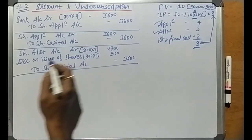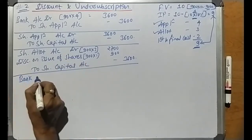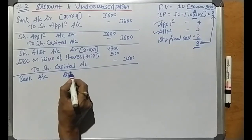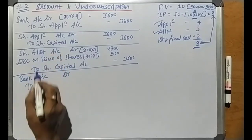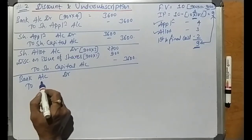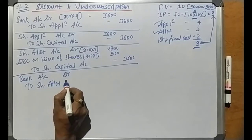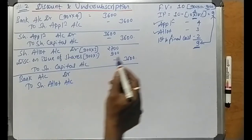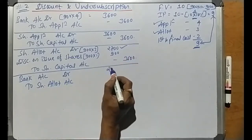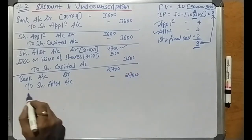Now the receipt entry for the allotment stage: Bank Account debit to Share Allotment Account. The amount collected on allotment is rupees 2,700, so Bank Account Dr ₹2,700 to Share Allotment Account ₹2,700.